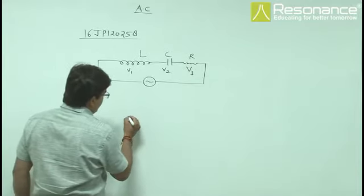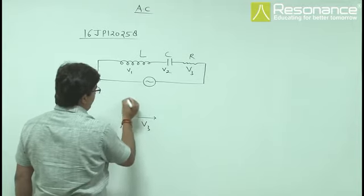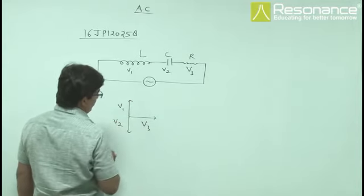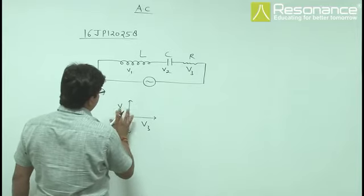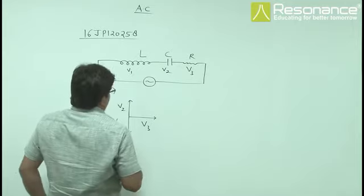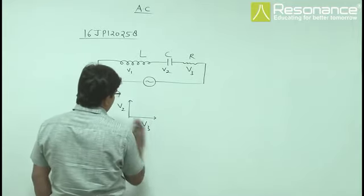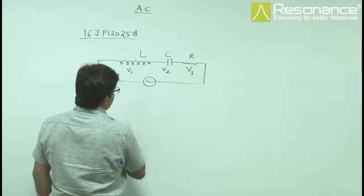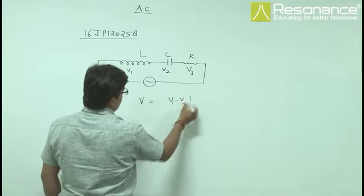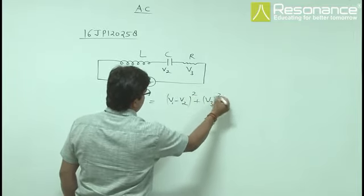So we draw a phasor diagram. This is V3 for the resistor, and V1 and V2. Total potential drop equals the square root of (V1 minus V2) squared — or (V2 minus V1) squared — plus V3 squared.